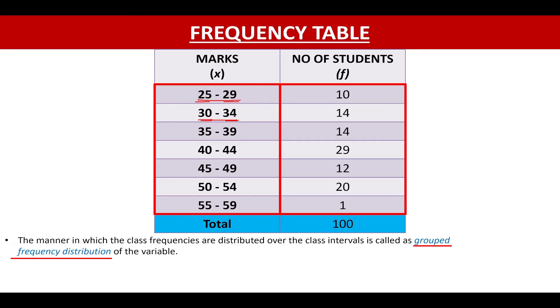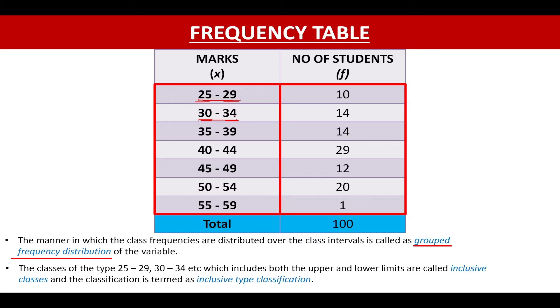Since these class intervals include both the upper limit and the lower limit, they are called inclusive classes, and the classification is termed as inclusive type classification.